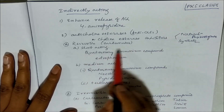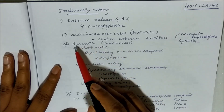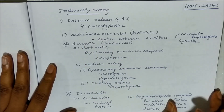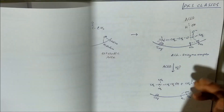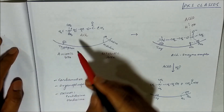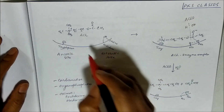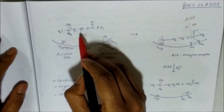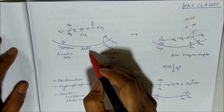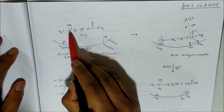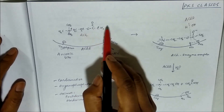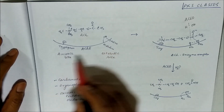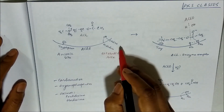We can classify anticholinesterases into reversible and irreversible. The enzyme acetylcholinesterase has a substrate - acetylcholine. In this enzyme, there is an anionic site and an esteratic site. The cationic part of acetylcholine binds to the anionic site (via tryptophan amino acid), and the ester part binds to the esteratic site (via the serine residue).